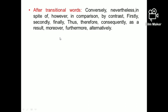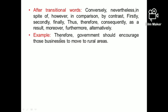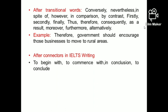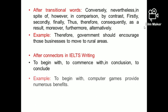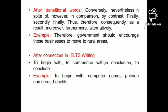Using commas after transitional words is part of the four criteria for writing assessment and affects your grammar accuracy score. For example: 'Therefore, the government should encourage those businesses to move to rural areas.' After transitional words, use a comma and leave a space afterwards. Also, after connectors used in IELTS writing like 'to begin with,' 'to commence,' 'to conclude,' we also need to use a comma. For example: 'To begin with, computer games provide numerous benefits.'